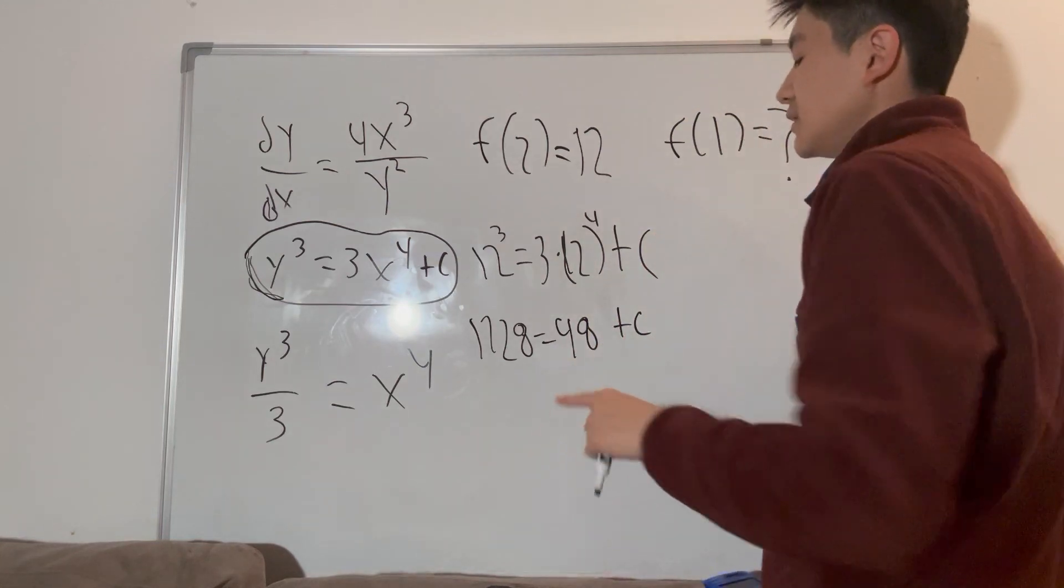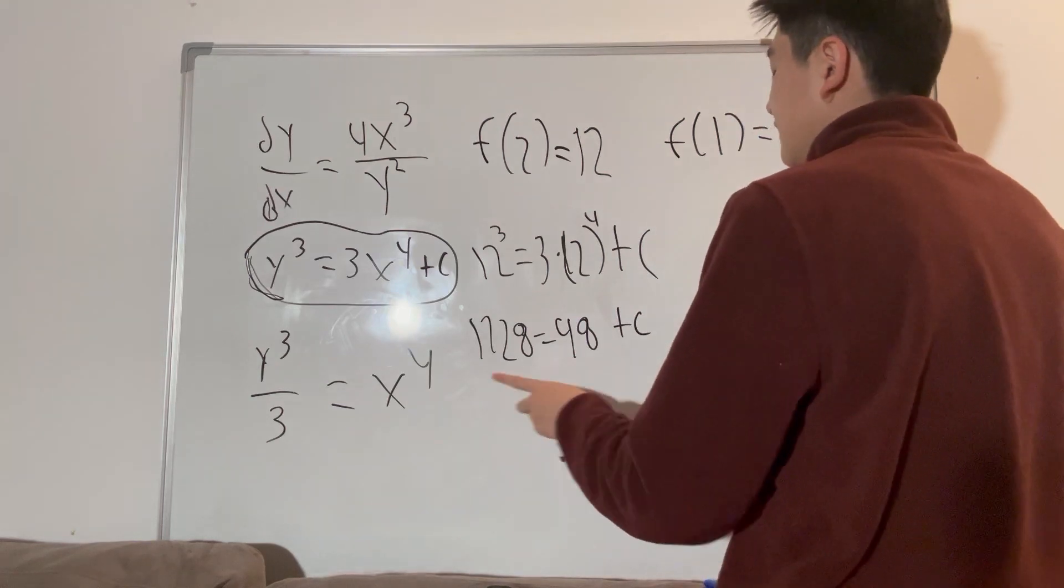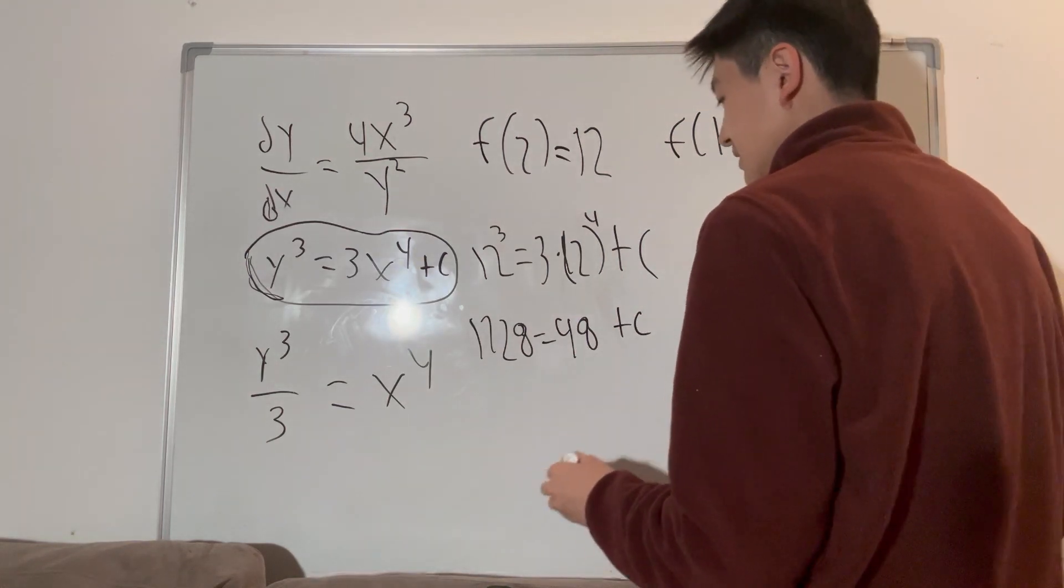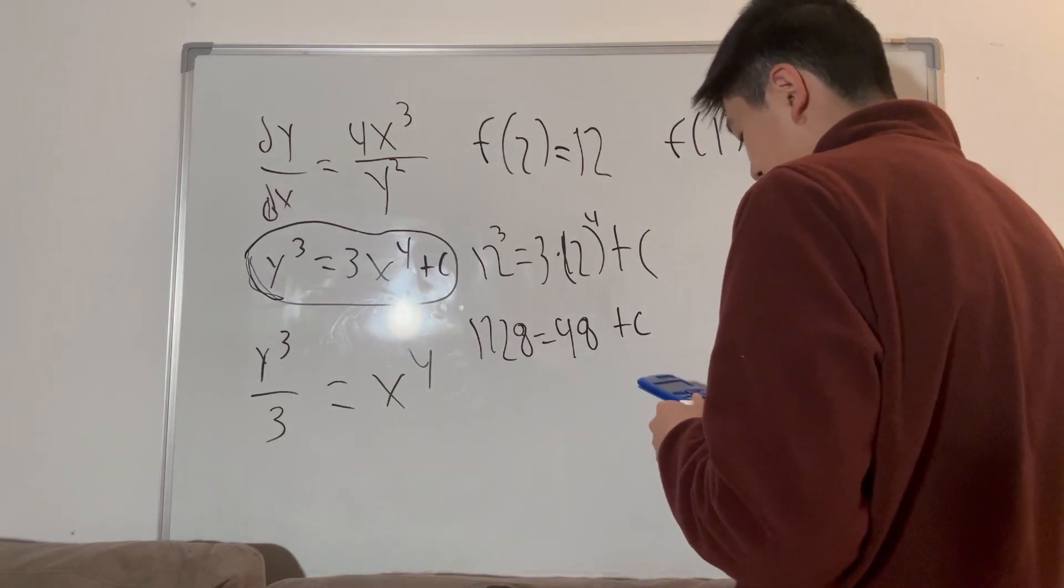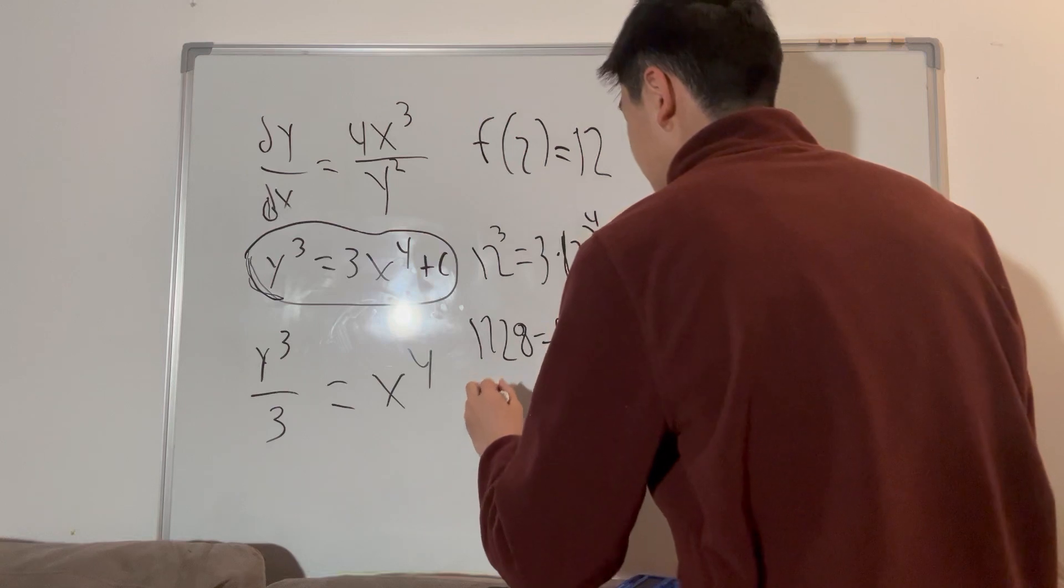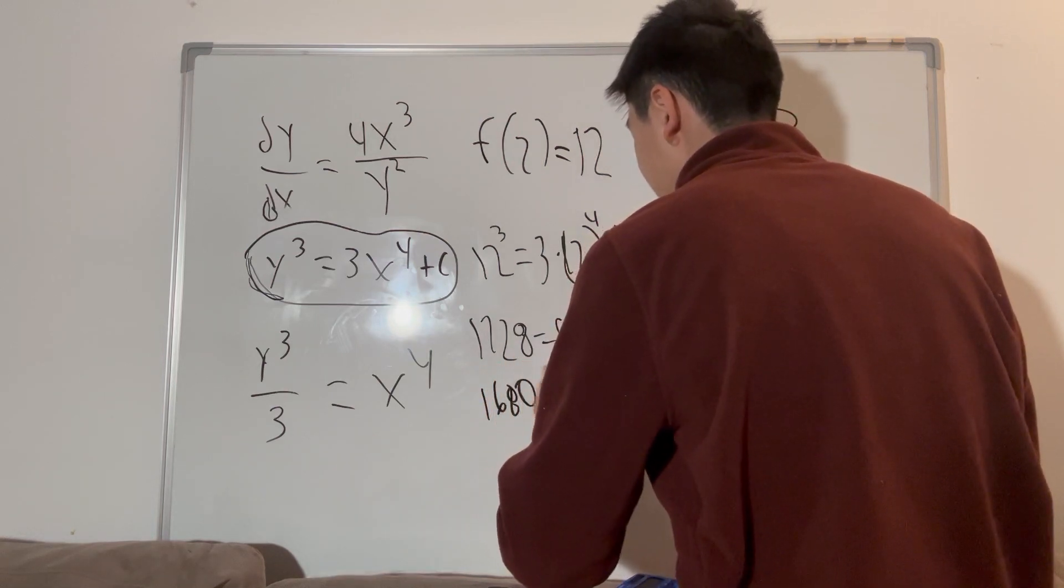So clearly, these two values don't equal each other. So we're going to subtract 48 from both sides to get what the value of c is. So 1728 minus 48 is equal to 1680. And that is our value of c.